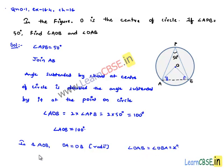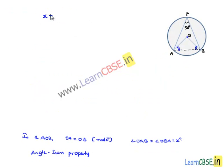Then, we know the angle AOB, that is 100 degrees. Now, let us apply angle sum property in this triangle. Then, we get x plus x plus 100 degrees is equal to 180 degrees.